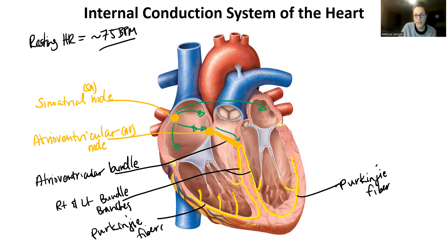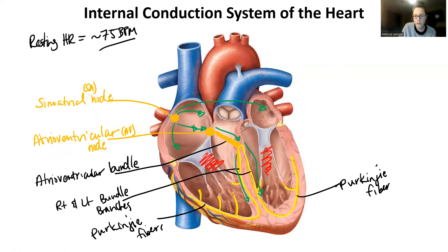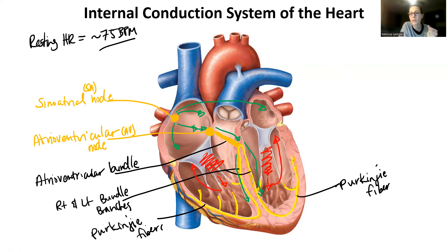Once the AV node depolarizes, that signal travels down the interventricular septum. The septum contracts, squishing blood downward, but the exit is not at the bottom of the heart, so blood gets pushed back up. This is why we have atrioventricular valves — as blood pushes back up toward the atria, the atrioventricular valves close, preventing backflow of blood into the atria.